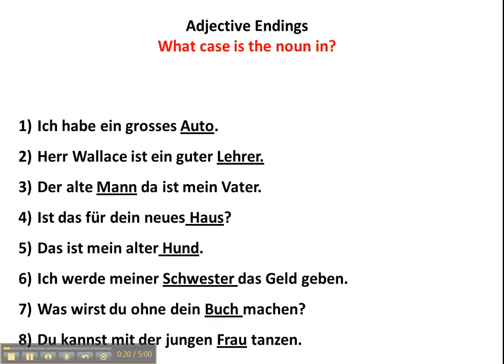The first thing we want to do when we're trying to figure out what the adjective ending is for an adjective in German is to look at the noun that it's modifying or that it's in front of. So we're going to try some exercises with that, just determining the case of the underlying nouns. If you'd like to try this on your own first, stop the video here. If not, here come the answers — hier kommen die Antworten.